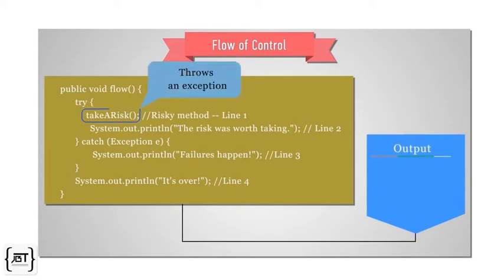On the other hand, if take a risk does throw an exception, code in the catch block runs. Rest of the try block never runs. After catch block, the code below the catch block runs. Line 3 and line 4 will be printed as output.